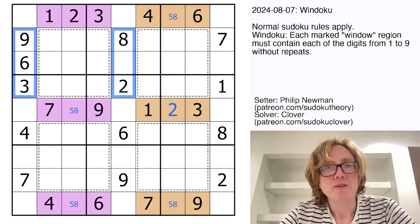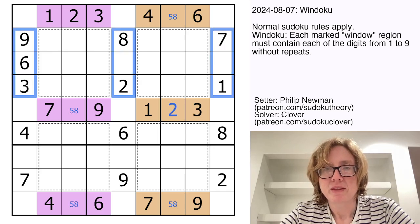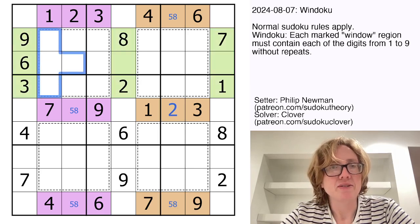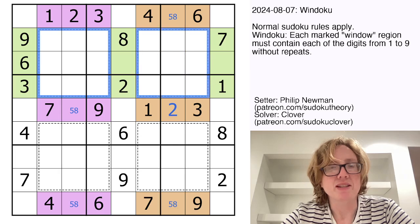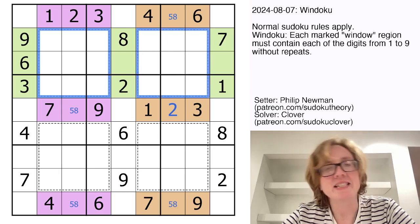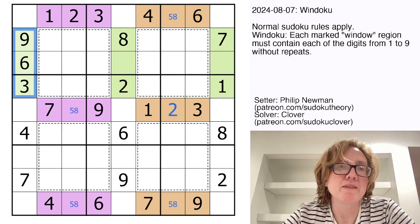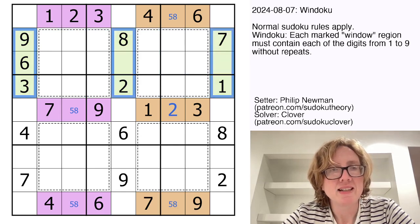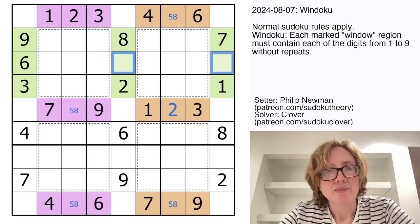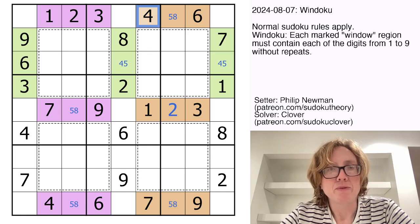We can do the exact same thing horizontally as well. For the same exact reason, if we consider these two regions versus the three rows, we get one set of one through nine in these cells. And so these missing digits from that set of one through nine are four and five. And because we have a four in this region, we can place our five.